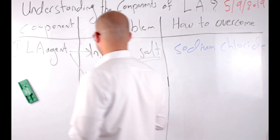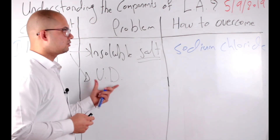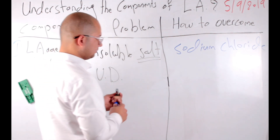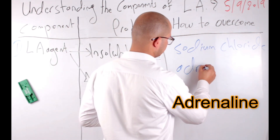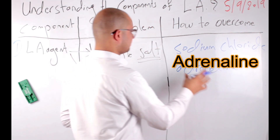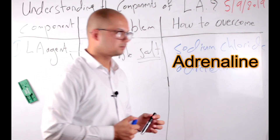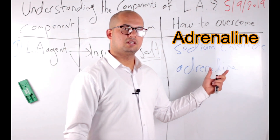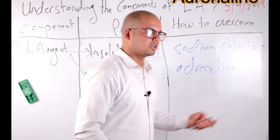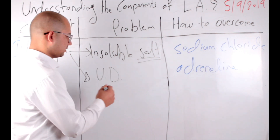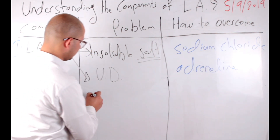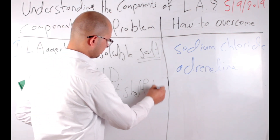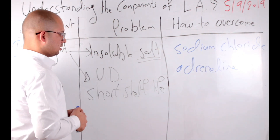So how do we overcome this vasodilatory effect of local anesthetics? By adding adrenaline. Adrenaline is the best vasoconstrictor used in local anesthesia. However, adrenaline is unstable — it is easily oxidized — so it will decrease the shelf life of local anesthetics.